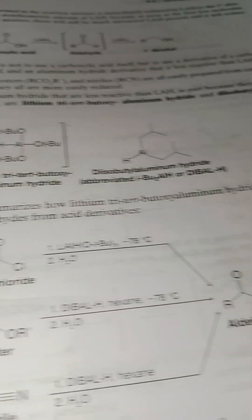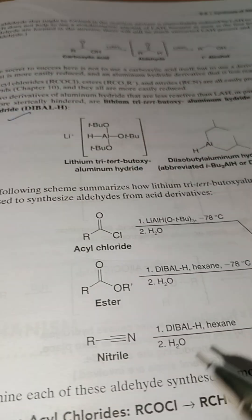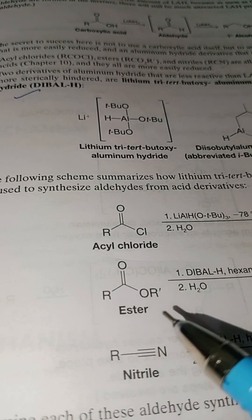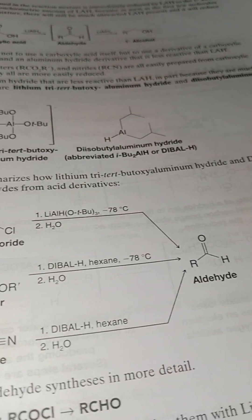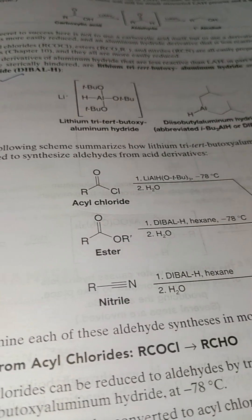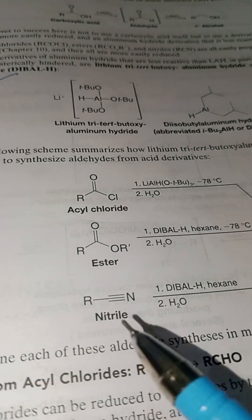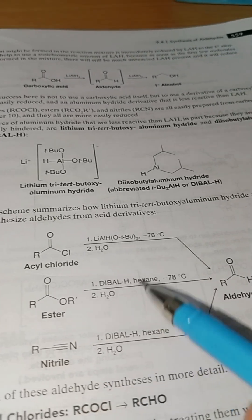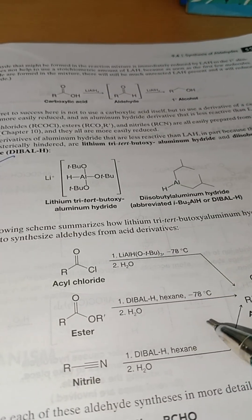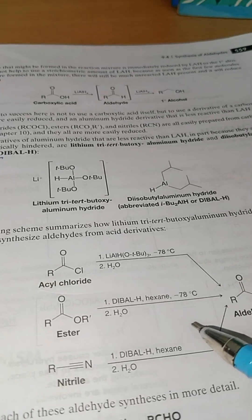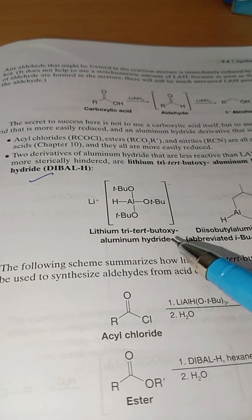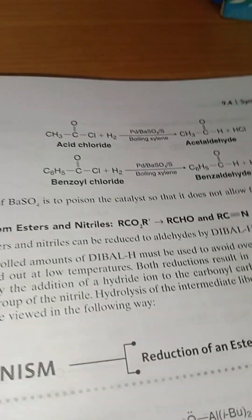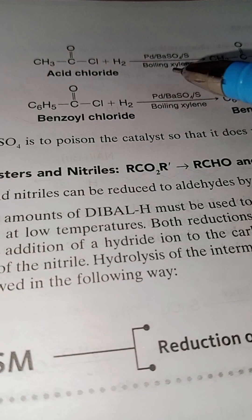These reagents reduce acid chloride to aldehyde. The same reagent can be used for esters, which are reduced to aldehyde instead of going all the way to primary alcohol. We can also use this reagent for nitriles, where we will again get aldehyde. We can also synthesize aldehyde from acid chloride using the Rosenmund reduction.